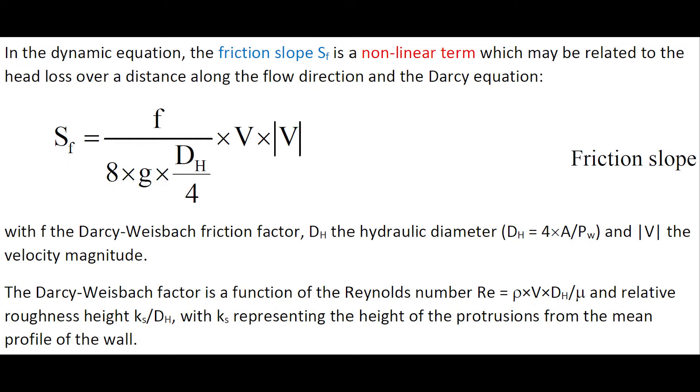And in this expression, f is the Darcy-Weisbach friction factor, DH the hydraulic diameter (DH = 4×A/Pw) and |V| the velocity magnitude.